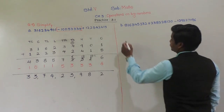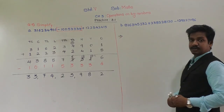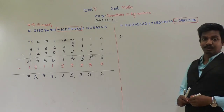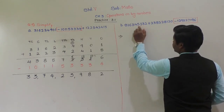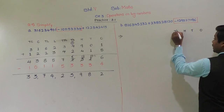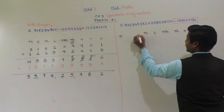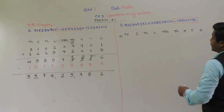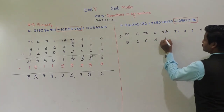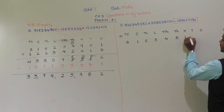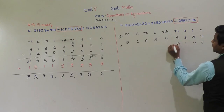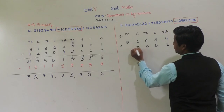Now see the second example. Find the negative number first — the number which has a minus sign in front of it — make a box around it with its sign. That means these two numbers we have to add. The first number is 81 crore 63 lakh 45132, and we add the second number: 02 crore 18 lakh 25832.